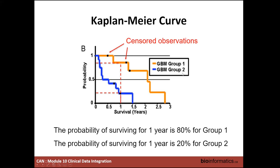There are also censored observations — patients where we know they lived at least a certain amount of time but we don't have more information beyond that point. That's why these points appear on the curve — showing the information we have on them. We can include that in our model, but we can't say more; we don't know if they survived beyond that point.